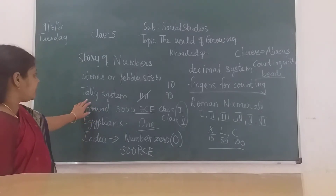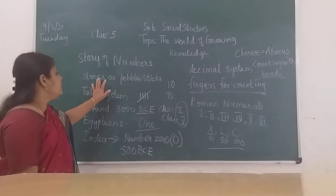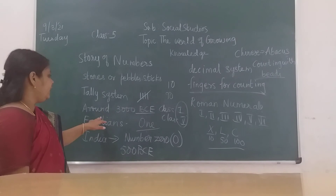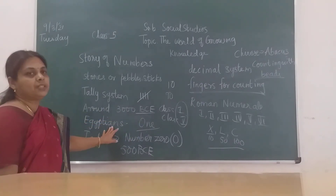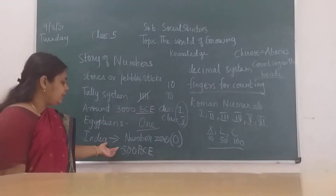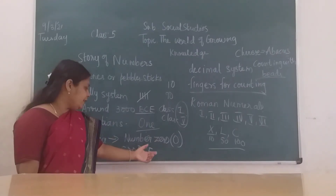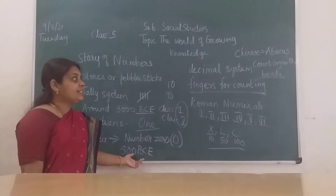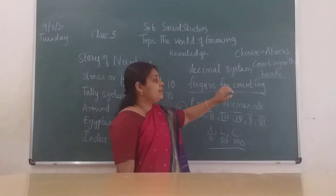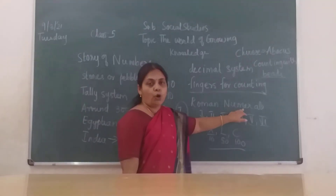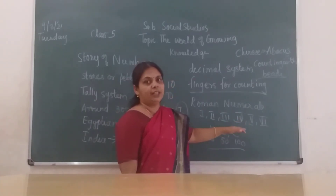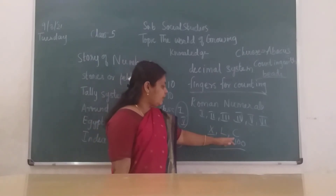Let's review: first, early humans used stones, pebbles, or sticks; next came the tally system using lines; around 3000 BCE Egyptians invented the number 1; then India gave the world the number 0 around 500 BCE; using fingers for counting formed the decimal system; and then Roman numerals — X for 10, L for 50, C for 100.